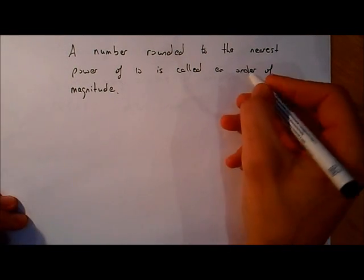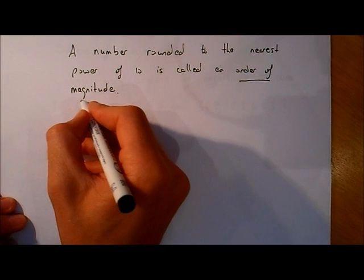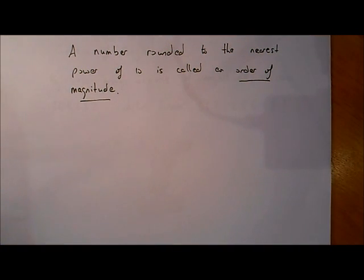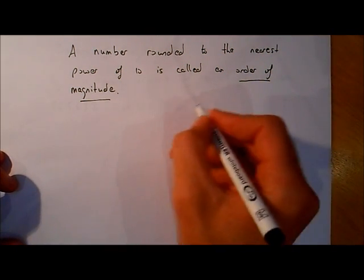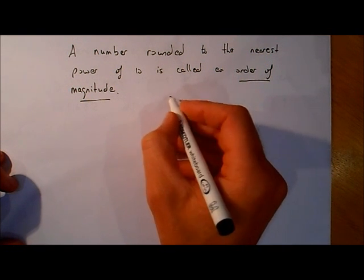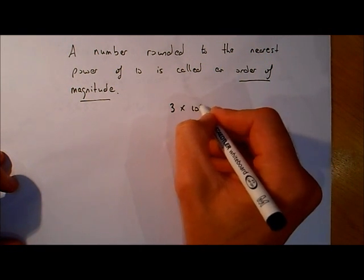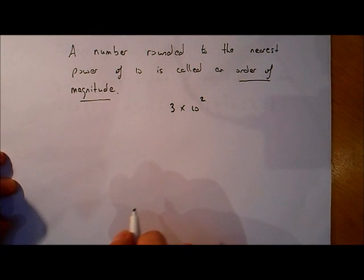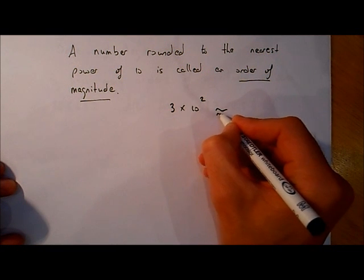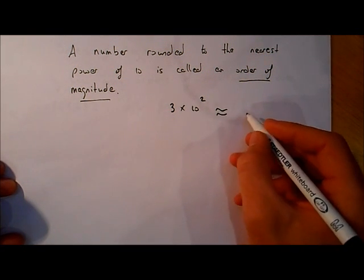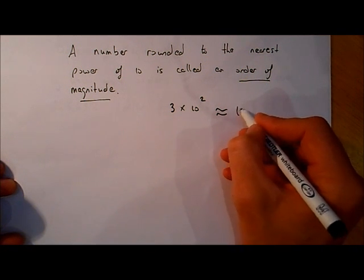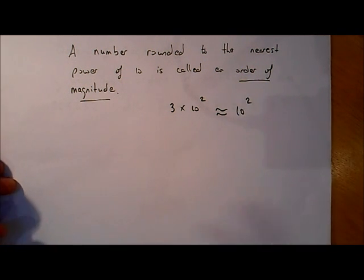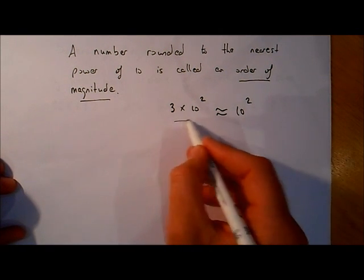Let's have a look at the idea of an order of magnitude. All an order of magnitude is, is a number rounded to the nearest power of 10. For example, say 3 multiplied by 10 to the power of 2 — this number is 300. Written to the nearest power of 10, that's approximately equal to 10 to the power of 2. So the order of magnitude here is 10 to the power of 2.